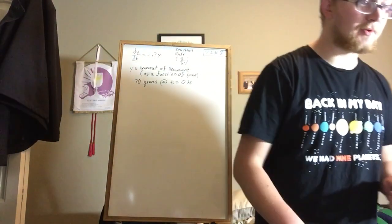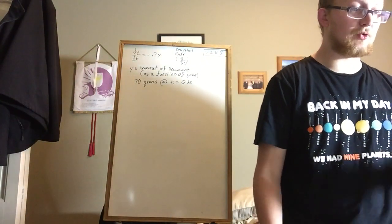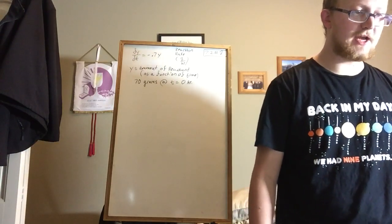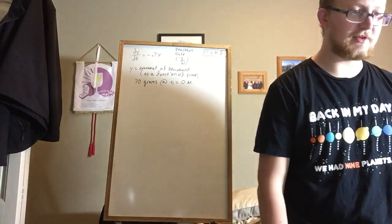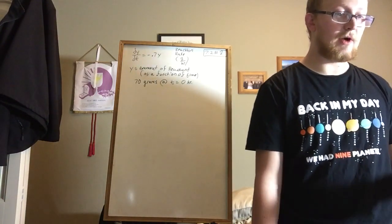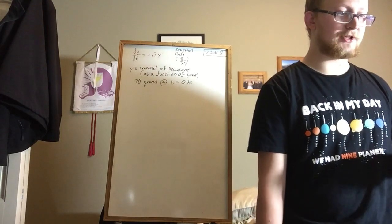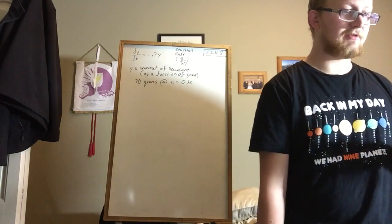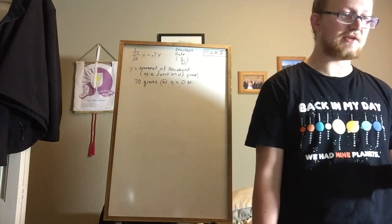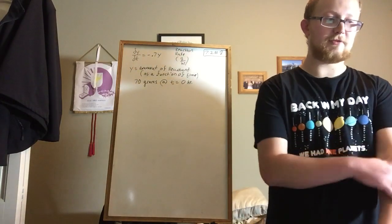I'm going to read it to you because it's a story problem. For a particular chemical reaction, the rate in grams per hour at which one of the reactants changes is proportional to the amount of that reactant present. If y represents the amount of that reactant at time t, if there were 70 grams of the reactant when the process started at t equals 0, how many grams will remain after 3 hours?